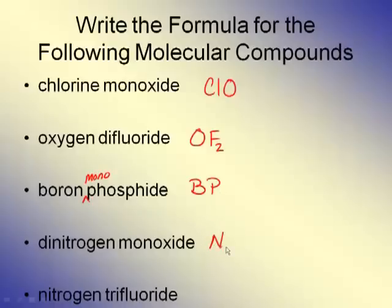Dinitrogen. Nitrogen is N, but I've got two of them because it's di. Monoxide. O. But I've got one O. Again, notice I don't write any of the ones. Ones are implied in chemistry. Nitrogen trifluoride. N. Fluorine is F. Tri means three. NF3.